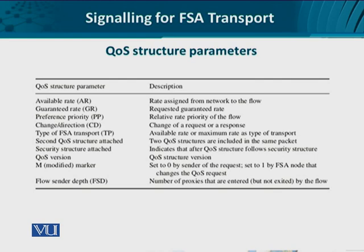The type of flow state aware transport involves the available rates and maximum rates provided by the network, including ABR, VBR, CBR, etc. Then there is a second QS structure which can be attached.